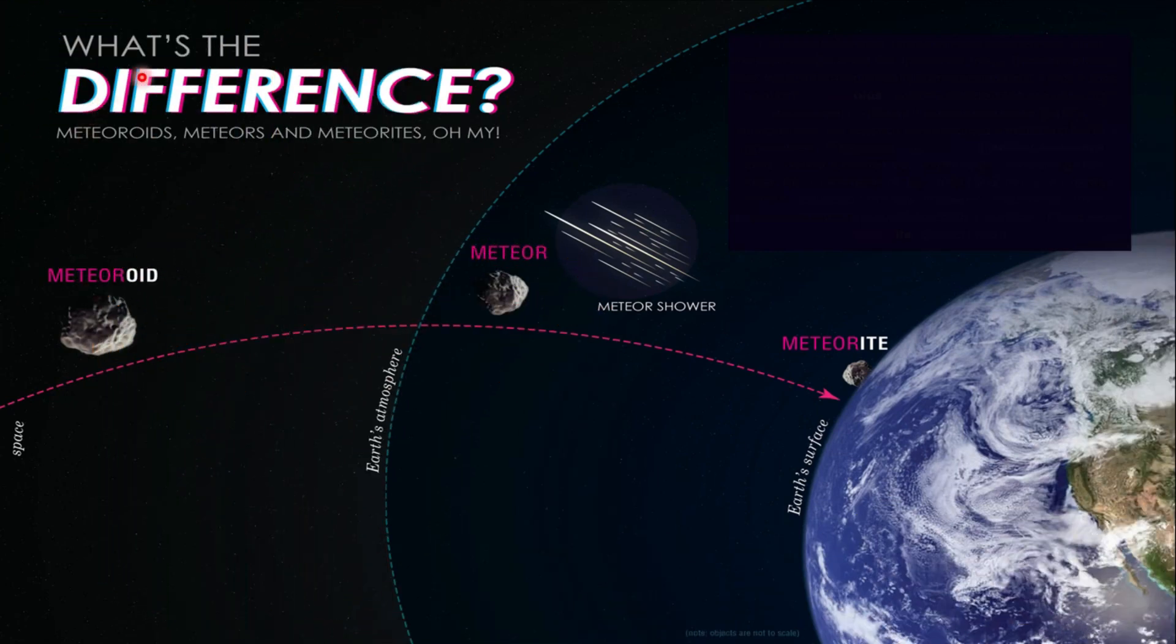Now we may see the differences between meteoroid, meteor, and meteorite in one diagram. This is meteoroid, then forming meteor, and lastly meteorite.